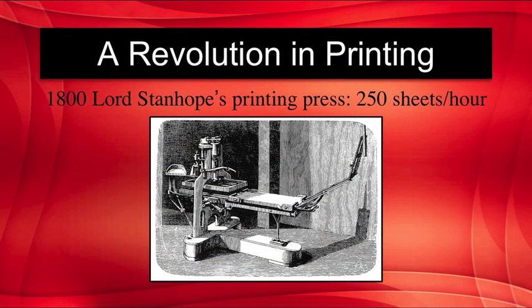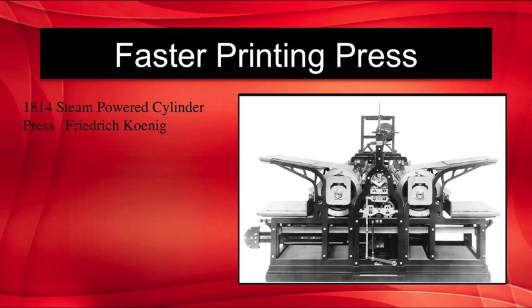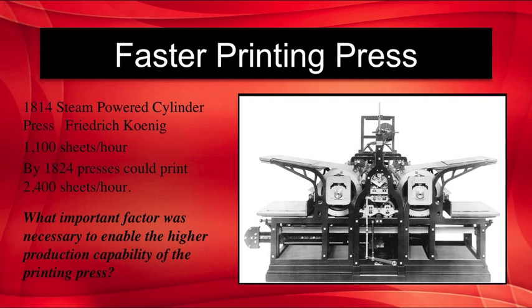This brings us to a revolution in printing. By 1800, Lord Stanhope's revised printing press could print up to 250 sheets per hour. By 1814, the steam-powered cylinder press, invented by Friedrich Koeing, could print 1,100 sheets per hour, and this was just the beginning. By 1824, presses could print up to 2,400 sheets an hour. By the 1830s, printing began its huge expansion as all over Europe and America, book and newspaper printers began to retire their hand presses and replace them with steam-powered ones. What important factor was necessary to enable the higher production capability of these printing presses?